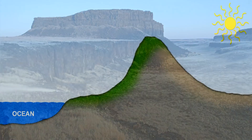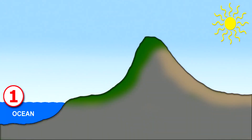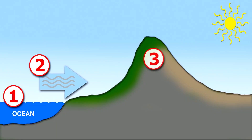You want a rain shadow effect? You need three essential items: an ocean nearby, winds blowing steadily onshore, and a mountain range to block the traveling air mass.